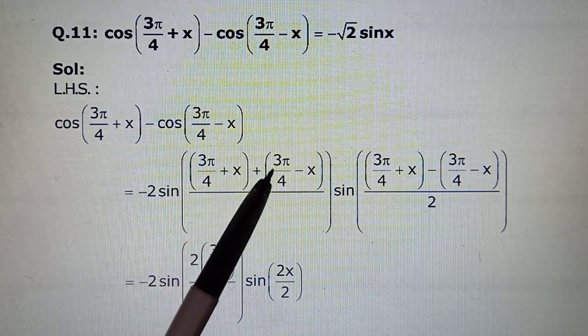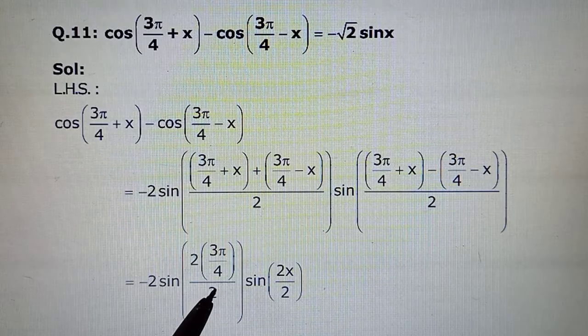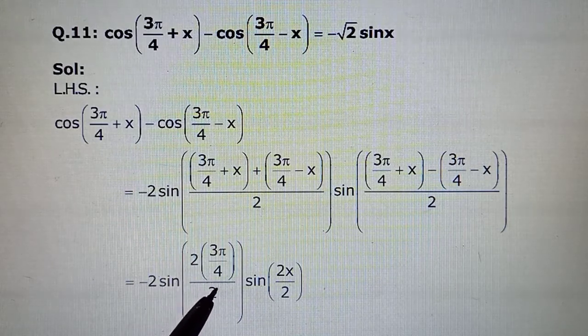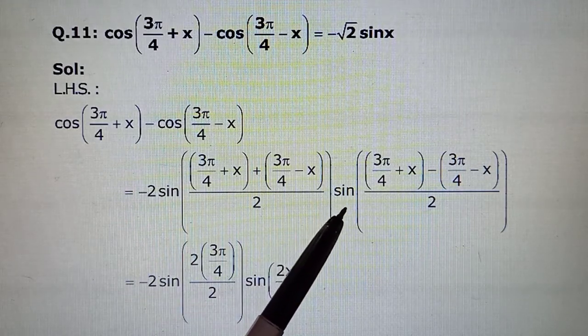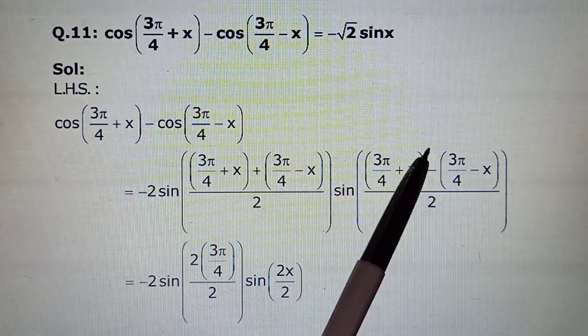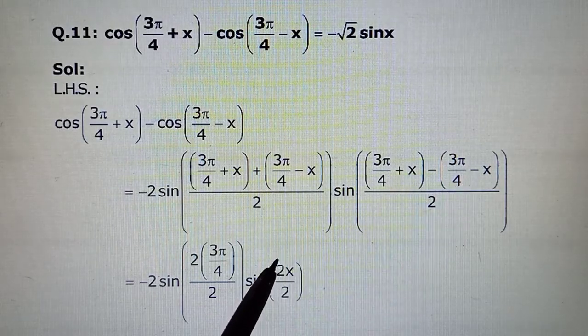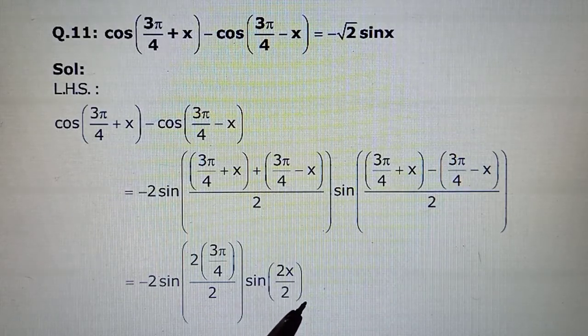Plus x and minus x is getting cancelled and upon 2, so that is getting cancelled. Next step we will see what we will be left with. And this side, when you are subtracting the angles, then 3π/4, 3π/4 cancelled, and x and x add up to give you 2x and upon 2 from the formula.